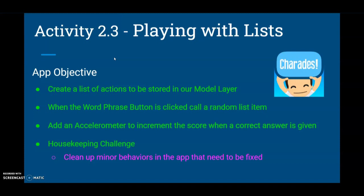We'll also learn how to add a sensor known as an accelerometer, which is used to detect the shaking motion. When the accelerometer detects that the device is being shaken, we're going to increment the score to signal that a correct answer has been given. At the end of our video tutorial, we're going to take a look at a housekeeping challenge which will help us clean up some minor behaviors in our app that need to be fixed.